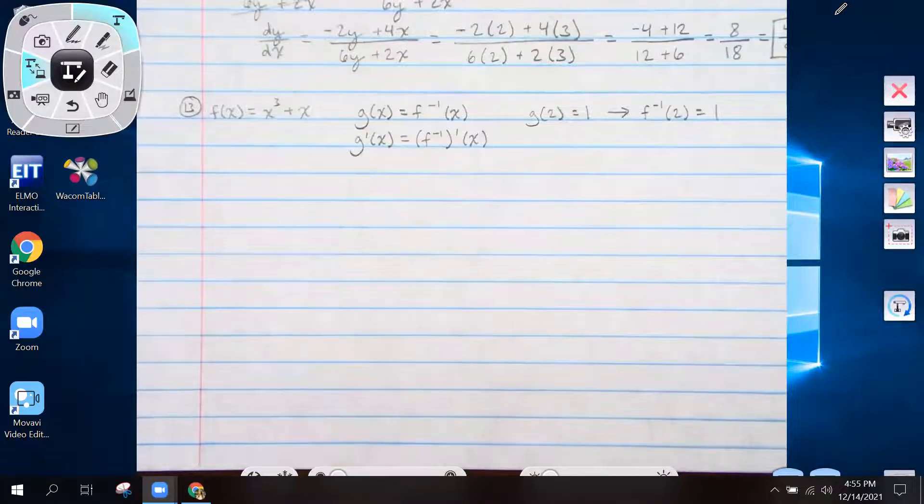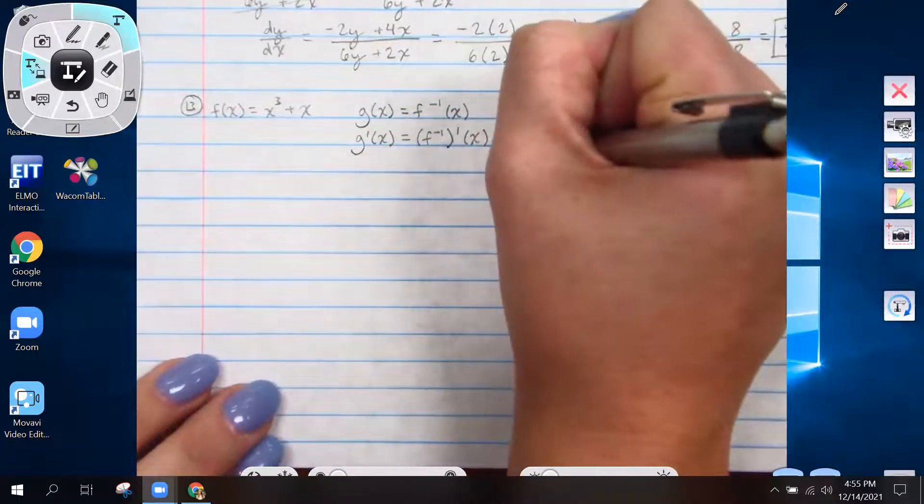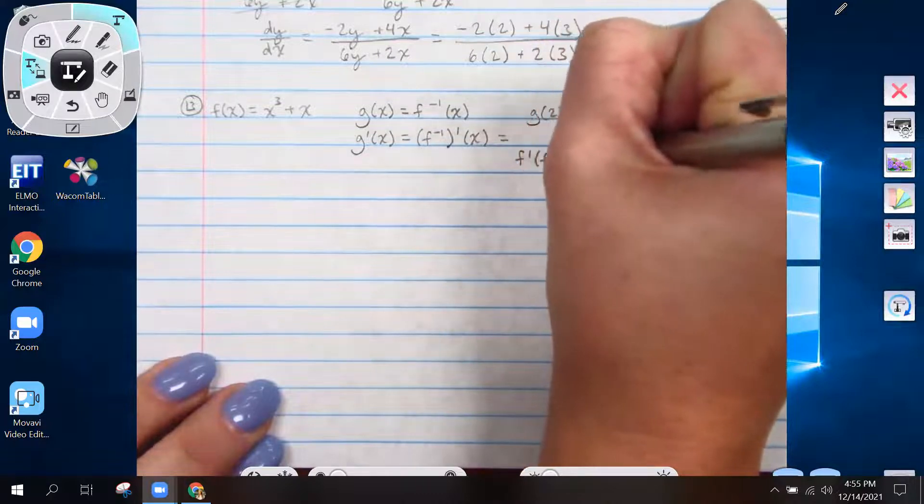We have a formula for this. It is 1 over f prime of f inverse of x.